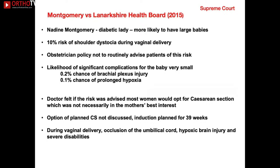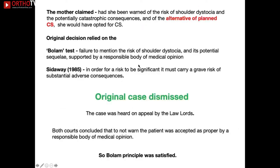In 2013, Nadine Montgomery was a diabetic patient with a much higher risk of shoulder dystocia during vaginal delivery. The practice was not to routinely advise patients of this risk, as the likelihood of significant complications was small — 0.1% chance of hypoxia and 0.2% chance of brachial plexus injury — and the doctor felt all patients would choose caesarean section. Unfortunately, during planned induction at 39 weeks, the umbilical cord was obstructed and the baby suffered severe disabilities from hypoxic brain injury.